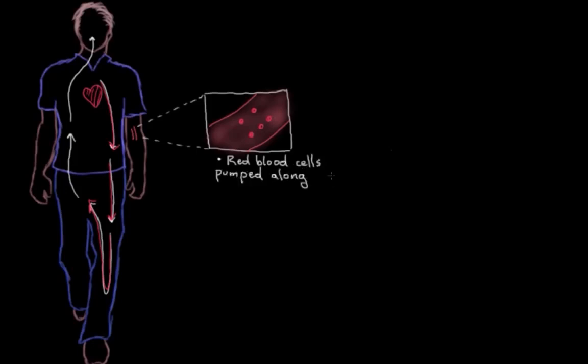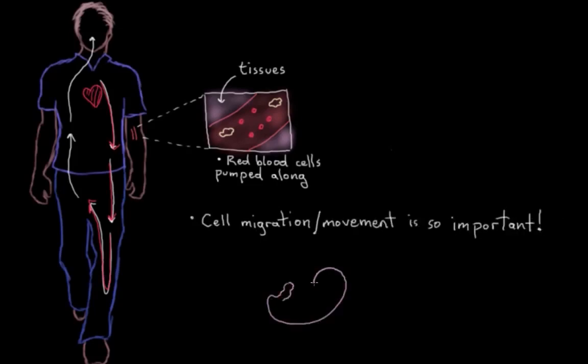But there are other cells that do swim around a bit. There's other cells that can move around on their own, and not just in our bloodstream. Some can move pretty well throughout our tissues as well. And cells migrating and moving around in our bodies is incredibly important. Actually, in development, cells migrating from one part of the embryo to another is really important in forming our tissues and our organ systems. And in our adult bodies, cell movement is critically important for things like our immune system function.